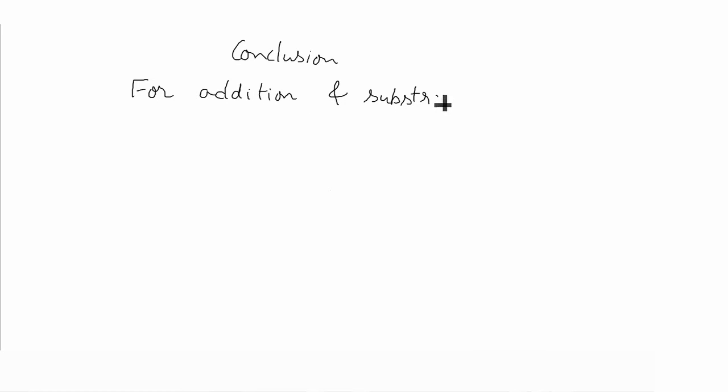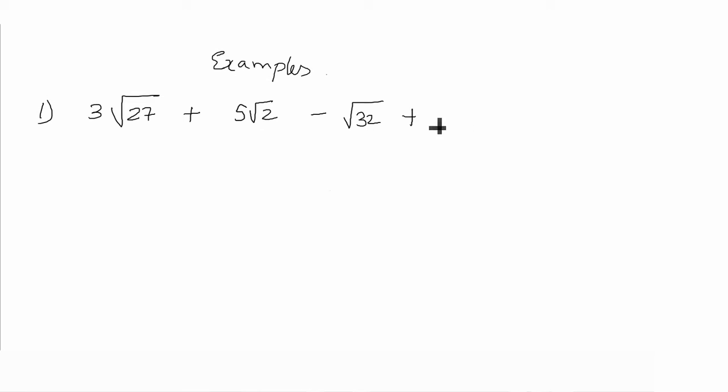For addition and subtraction of surds, the first condition is radicand of the surds must be equal and second condition is the order of surds which is n must be equal. Let us see some examples to understand this. 3 into root 27 plus 5 root 2 minus root 32 plus 4 into square root of 240. Here you can see the radicand of all the surds are different, however the order is the same.